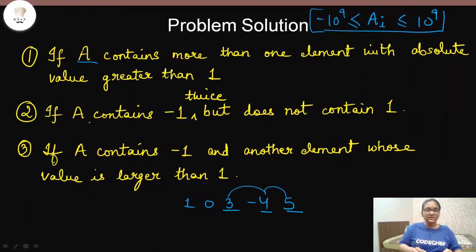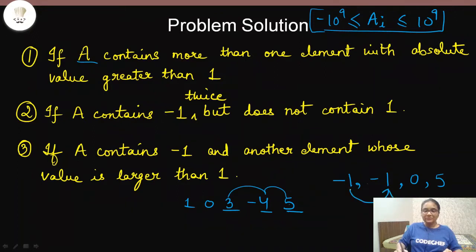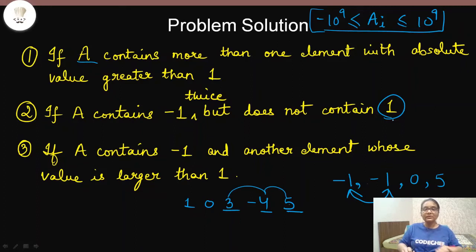The second condition is: if the array contains -1 twice but does not contain 1. If we have an array with [-1, -1, ...other integers], the sequence (-1)×(-1) will definitely be formed, giving us 1. But if 1 is not in the array, then this array will never be closed under multiplication. So if we have -1 twice, we also need 1 in the array.